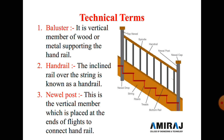Now we discuss some technical terms one by one. The first technical term is baluster. A baluster is the vertical member of wood or metal that supports the handrail. See this figure — the gray colored vertical lines represent the balusters, which are vertical members of wood or metal supporting the handrail.